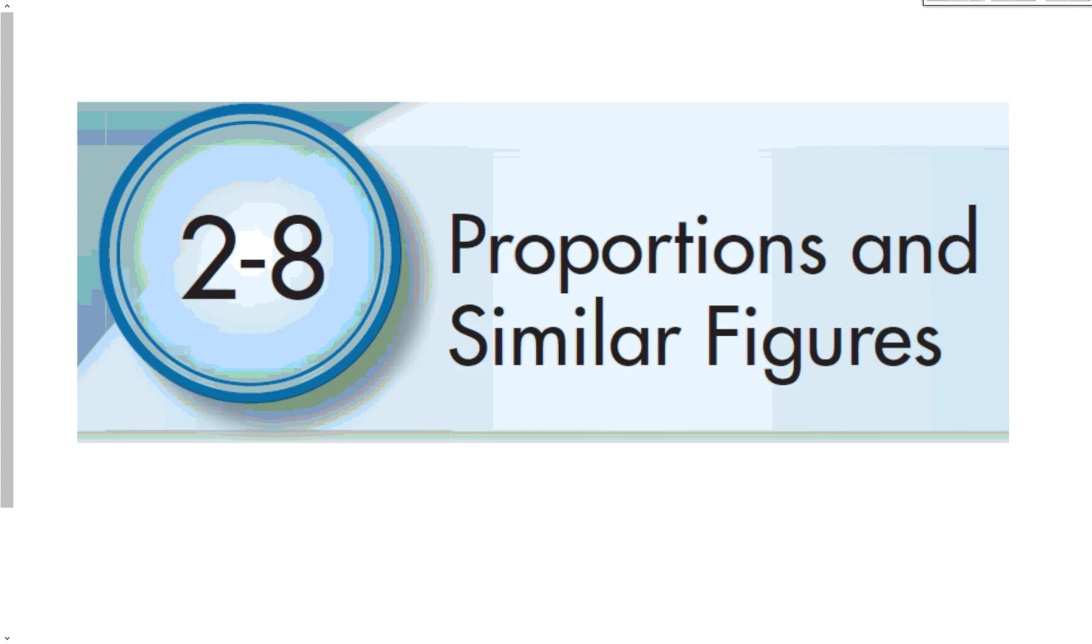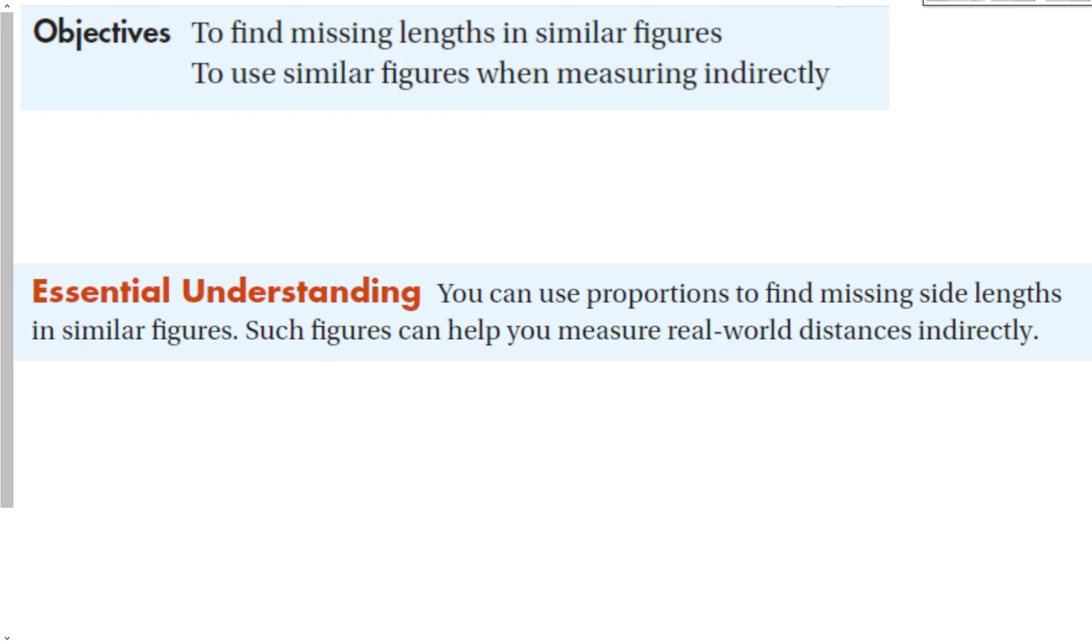2-8 Proportions and Similar Figures. Our objective for this lesson is to find missing lengths in similar figures and to use similar figures when measuring indirectly. Our essential understanding is that we can use proportions to find missing side lengths in similar figures. Such figures can help you measure real-world distances indirectly. We're taking what we did last section with proportions and introducing the concept of similarity. You will use this very often next year in Geometry.